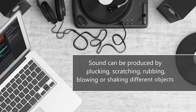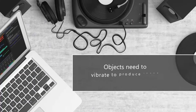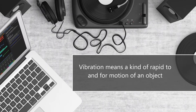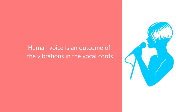It is not that you can only produce sound one way. By plucking, by stretching, by rubbing, by blowing, by shaking different objects — you can produce sounds. But whenever sound is produced, whether by a fork, scratching, rubbing, blowing, or shaking, you need vibrations. Objects need to vibrate to produce sound. Vibration means a kind of rapid to-and-fro motion of an object. Even the human voice is an outcome of vibration in the vocal cord.